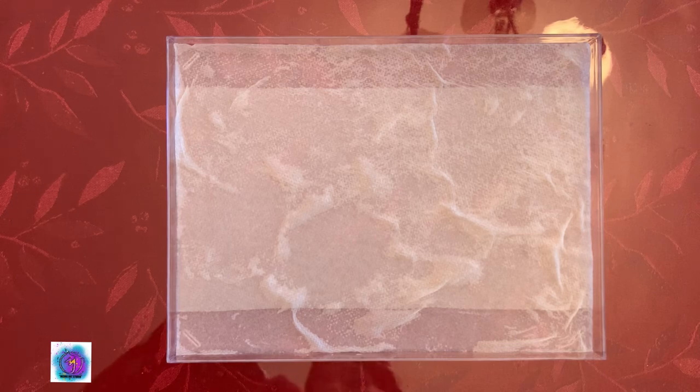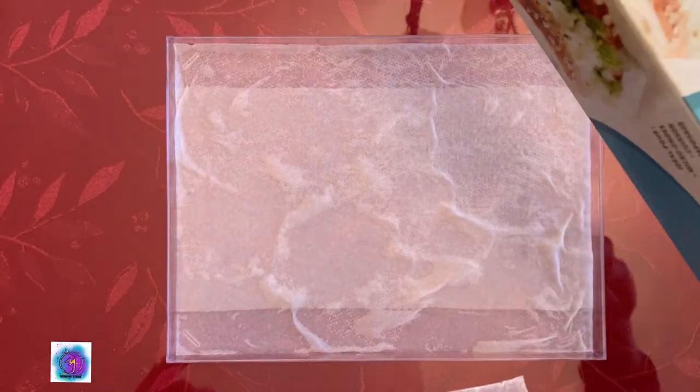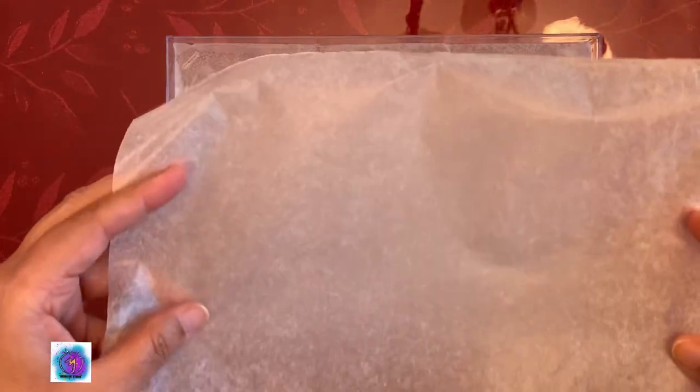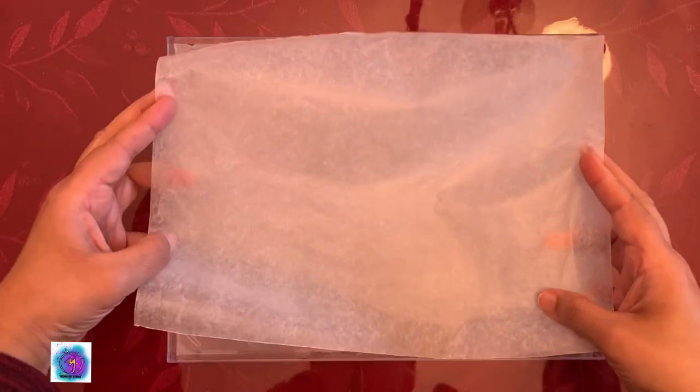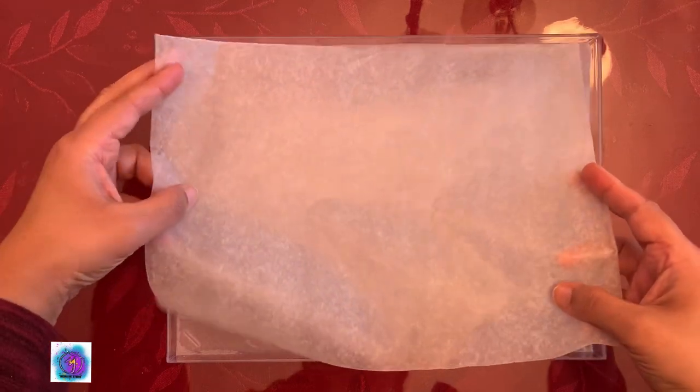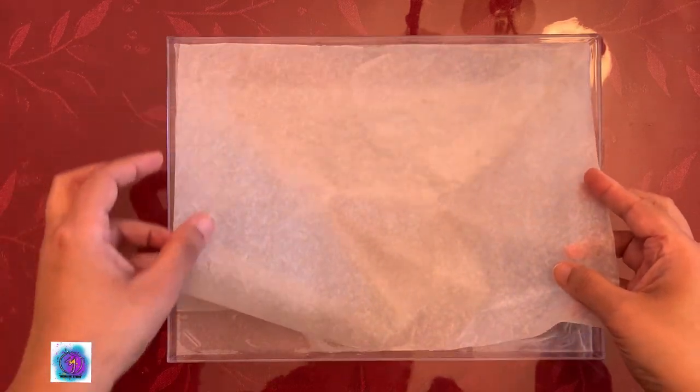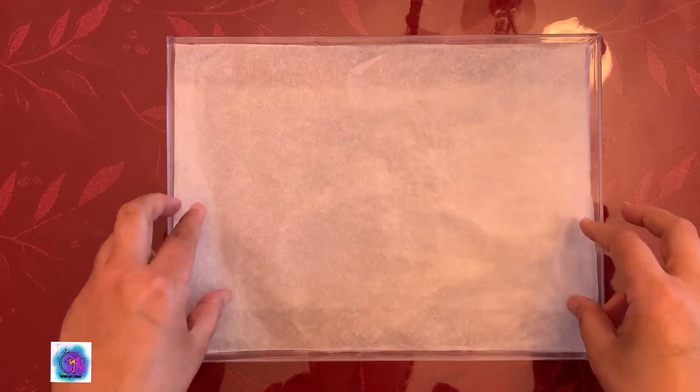Next, we are going to cut up a parchment paper or a wax paper. Any brand that you might have at home. After you have it cut to size, we just need a single sheet. We are just going to place it over the damp paper towels.